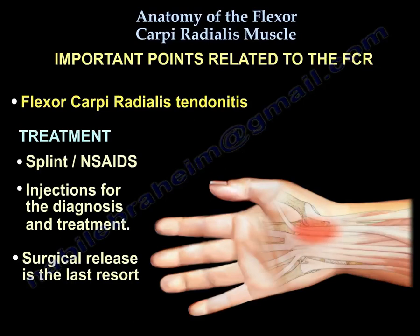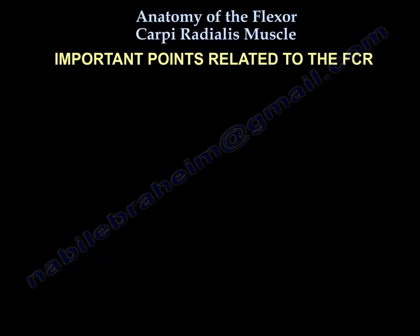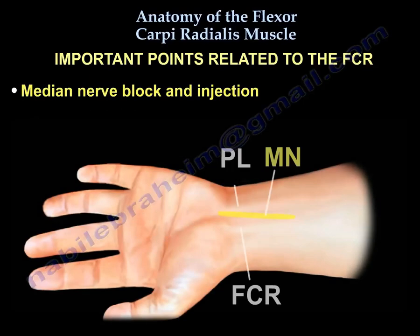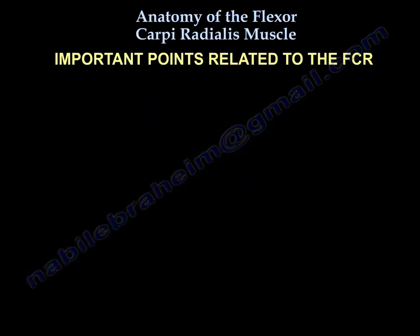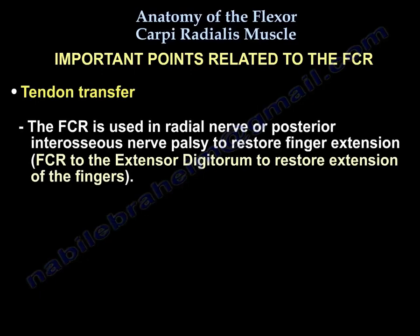Number three is surgical release as a last resort. Another important topic is tendon transfer: the flexor carpi radialis is used in radial nerve or posterior interosseous nerve palsy to restore finger extension — transferring the flexor carpi radialis to the extensor digitorum to restore extension of the fingers.